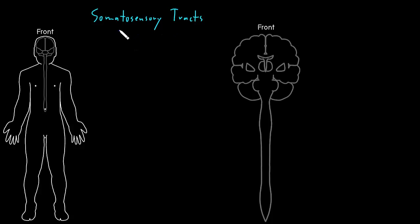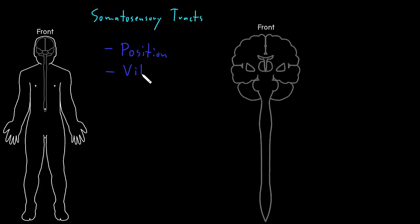In general, the different types of somatosensation break down into two big categories. The first includes position sense, vibration sense, and fine touch sense — or very precise touch sense information.